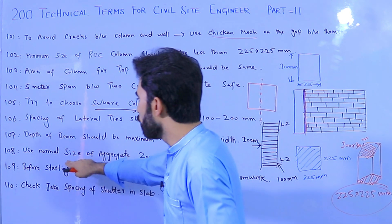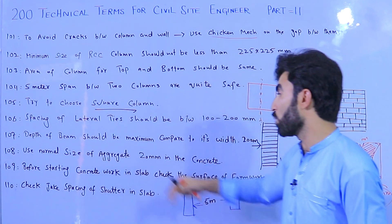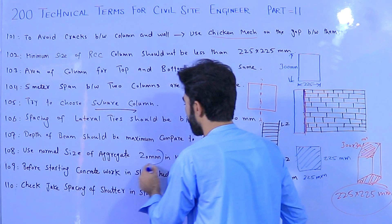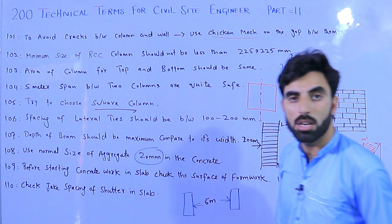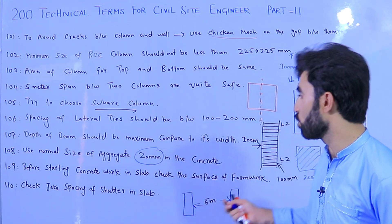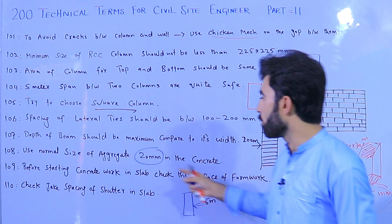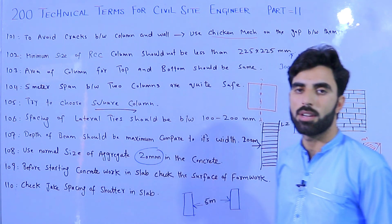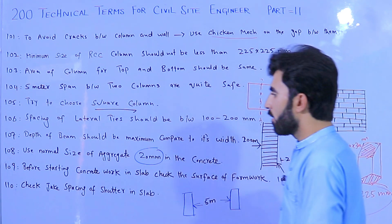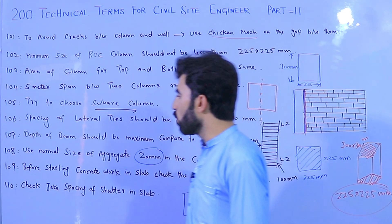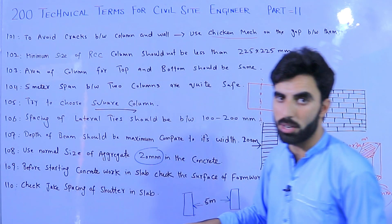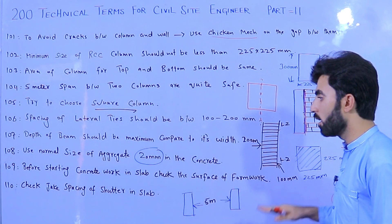Term 108: Use a normal aggregate size of 20 millimeters in concrete, especially for M15 or M20 grade concrete. Use the normal size of aggregate or crush.